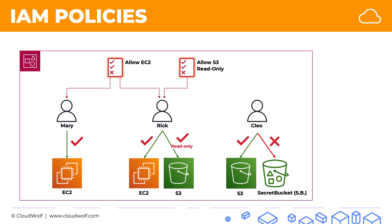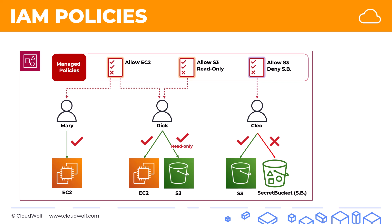So we're going to have to create our own policy — a customer managed policy — which will allow S3 and deny that specific bucket. All of these policies we've discussed so far are called managed policies. The first two were managed by AWS, created and maintained by AWS. You can look through them and pick the one that works for you, and if you don't find one, you can create a customer managed policy and code it how you want, then attach it to the users you want.